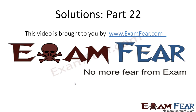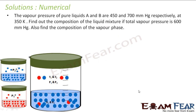Hello friends, this video on solutions part 22 is brought to you by examphia.com. Let's check some numericals now. The first numerical: the vapor pressure of the pure liquids A and B are 450 and 700 mmHg at a temperature of 350 Kelvin. We need to find the composition of the liquid mixture if the total vapor pressure is 600 mmHg.